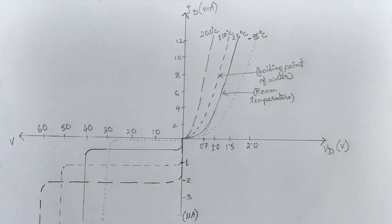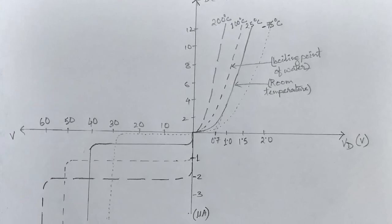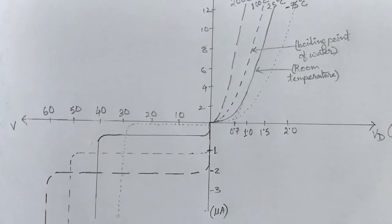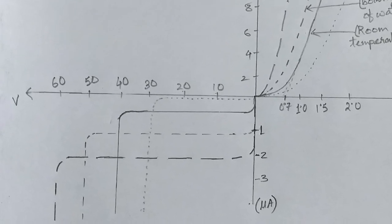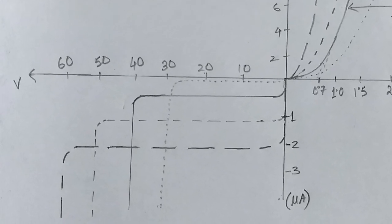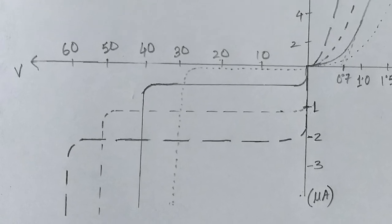Now, let us consider the reverse bias case. It has been found experimentally that the reverse saturation current, IS, is just about double in magnitude for every 10 degree Celsius rise in temperature.